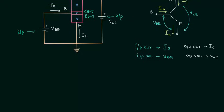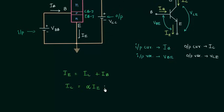We already know the emitter current IE is equal to IC plus IB. And the collector current IC is equal to alpha times IE plus ICBO. This is equation number one and this is equation number two. These two relations are true for every transistor connection.